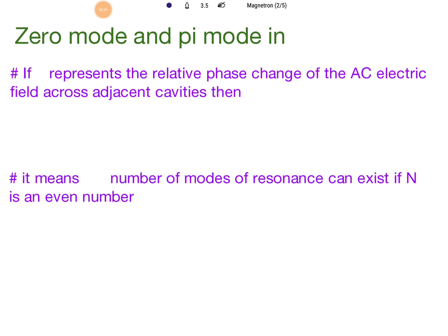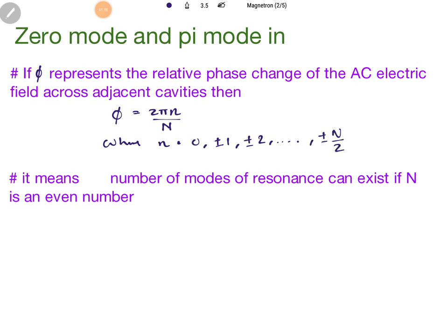First, how we can represent a mode in magnetron. If phi represents the relative phase change of the AC electric field across adjacent cavities, then phi equals 2π n divided by capital N, where the value of small n can be 0, ±1, ±2, up to ±N/2. This means there can be N/2 number of modes of resonance, if N is an even number.